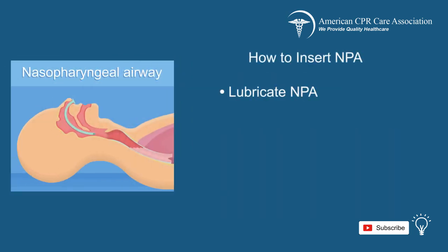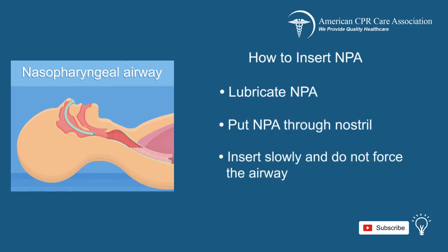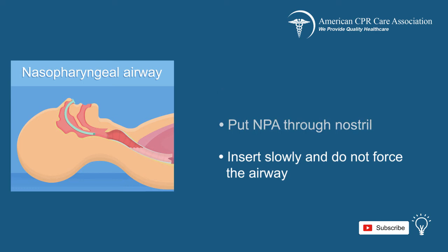Lubricate the NPA when possible. Put the airway through the nostril slowly, moving in a backwards direction down toward the floor of the nasopharynx rather than upwards. Be careful when inserting the airway as it can irritate the mucosa or lacerate the tissue, and do not force the device.